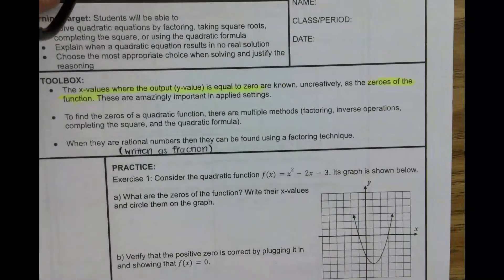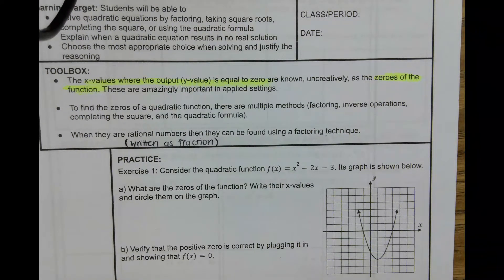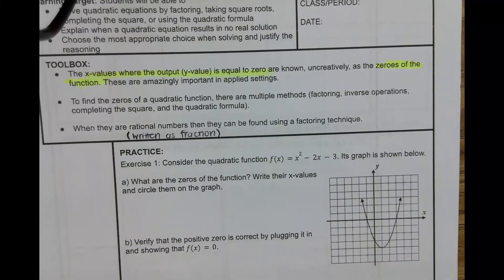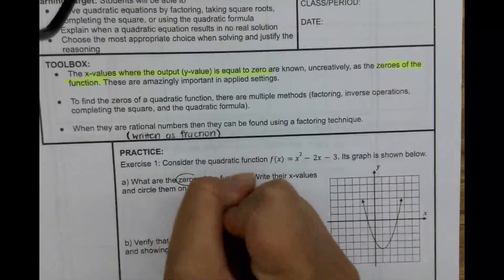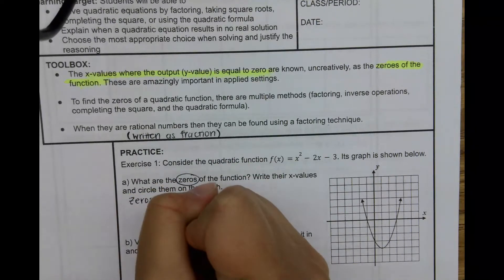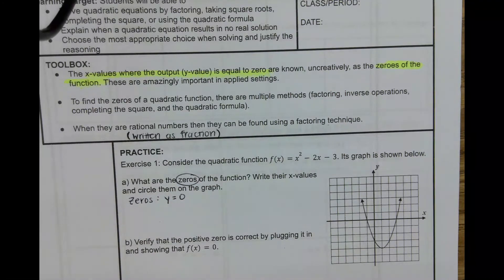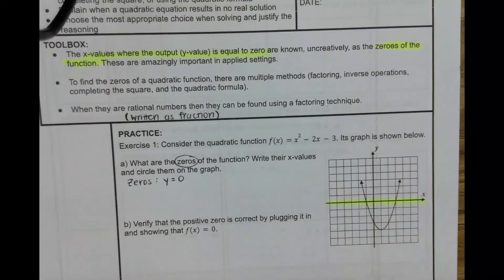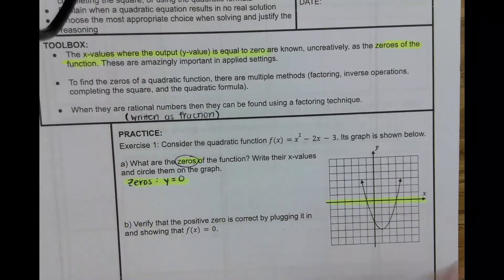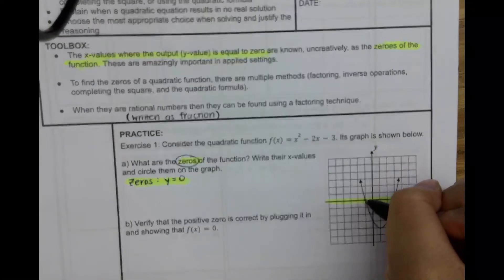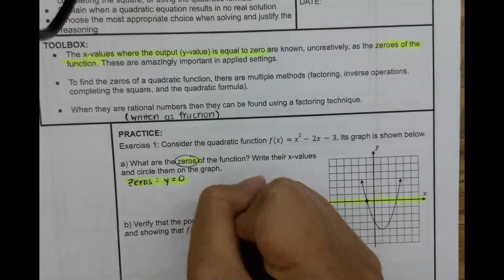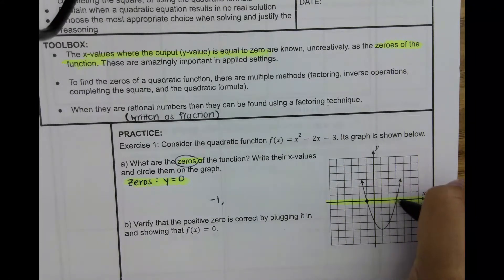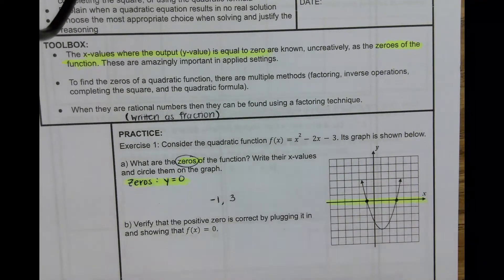So here, we're going to talk about what are the zeros of the function. Remember, zeros of the function is when your y-value is zero. So zeros means that y equals zero. Where is y equal to zero? That's right here on the x-axis. Here are the zeros. Our zeros is when y equals zero — so that's this line. Here we have two places where that happens: one is right here at negative one, and the other one is right here at where x equals three. So the x-values here are negative one and three.